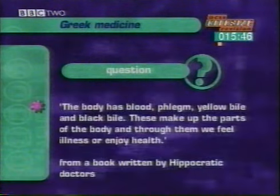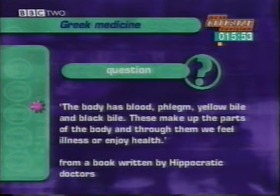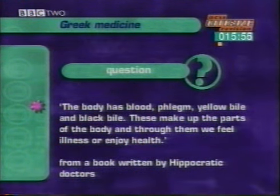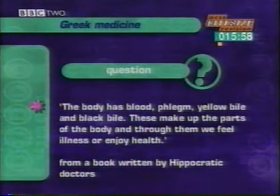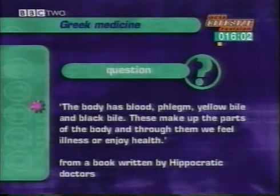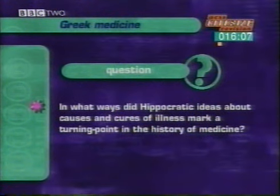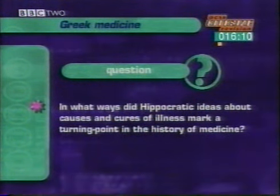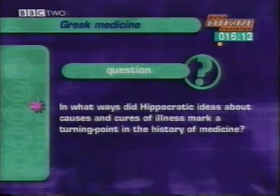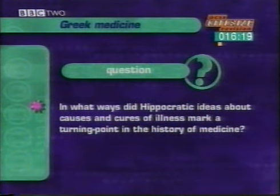Now for some practice. Here's a typical exam question about Greek medicine. 'The body has blood, phlegm, yellow bile and black bile. These make up the parts of the body and through them we feel illness or enjoy health.' This is a quote from a book written by Hippocratic doctors in about 400 BC. In what ways did Hippocratic ideas about causes and cures of illness mark a turning point in the history of medicine? In an exam this question would carry six marks. Stop the tape now and note down the main points of your answer.